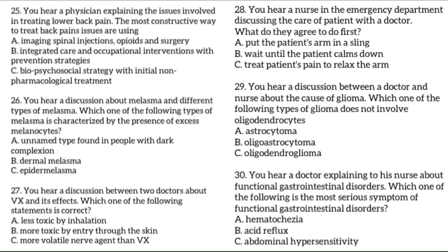Question 26. You hear a discussion about melasma and different types of melasma. Melasma is a common patchy brown, tan, or blue-gray facial skin discolouration, normally seen in women during their reproductive period. It typically appears on the upper lips, upper cheeks, forehead, and chin of women, of 20 to 50 years of age.